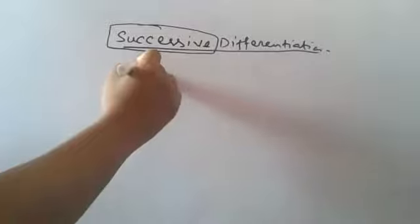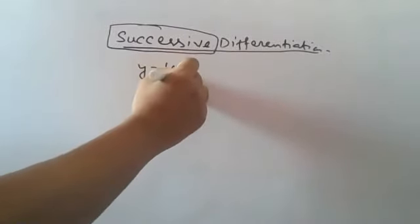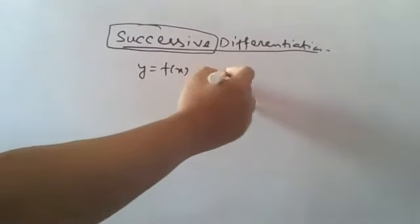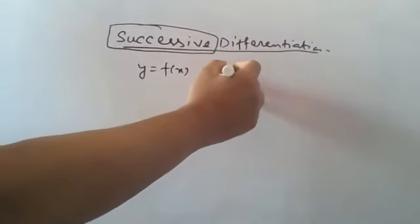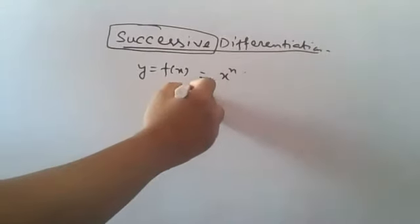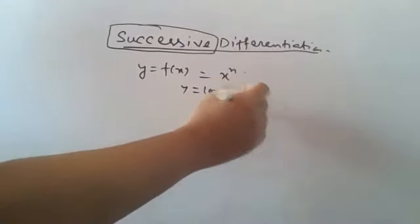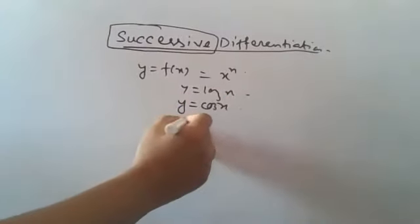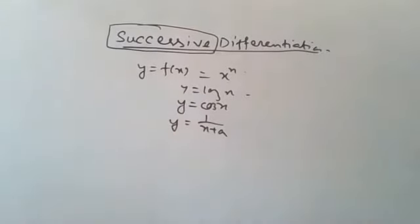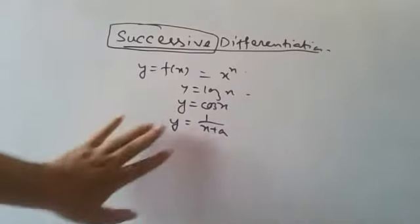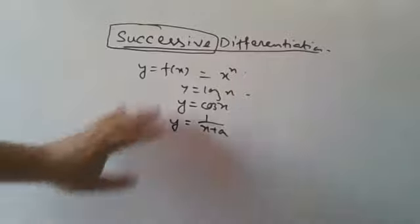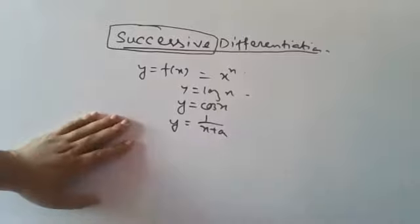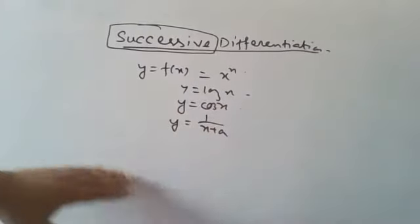Suppose we give y is equal to f of x. This function is very difficult. Suppose we give y is equal to x to the n, or y is equal to log x, or y is equal to cos x, or y is equal to 1 by (x plus a). What do we know about x to the n, cos x, 1 by (x plus a)?